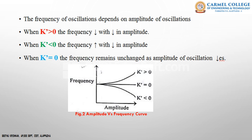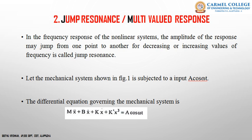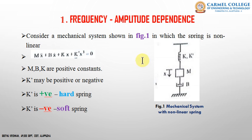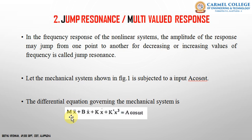The second characteristic is jump resonance or multi-valued response. In the frequency response of a nonlinear system, the amplitude of the response may jump from one point to another for increasing or decreasing values of frequency. Consider the same mechanical system with a nonlinear spring excited by an input a·cos(ωt), where a is the amplitude and ω is the frequency. The equation becomes: m·ẍ + b·ẋ + kx + k'x³ = a·cos(ωt).